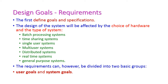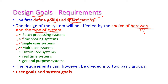For designing any operating system we have to define the goals and specifications first. The design of a system is directly affected by the hardware and the type of system. Types of systems include batch processing systems, time sharing systems, single user systems, multi-user systems, distributed systems, real-time systems, and general purpose systems. All these different computers require different operating systems because their purposes are different.